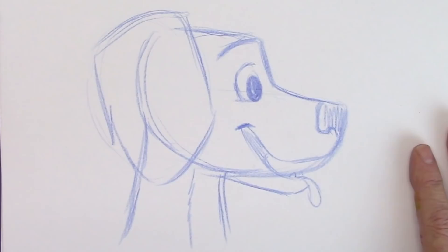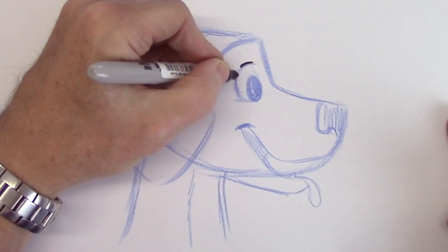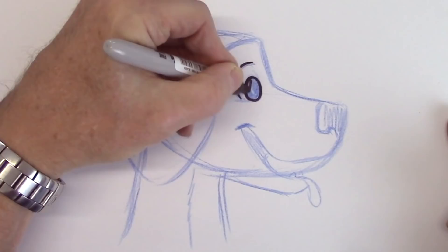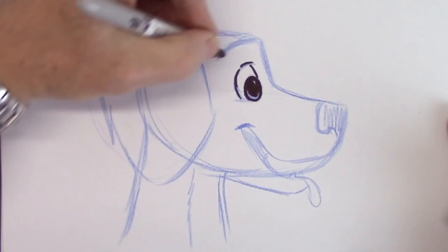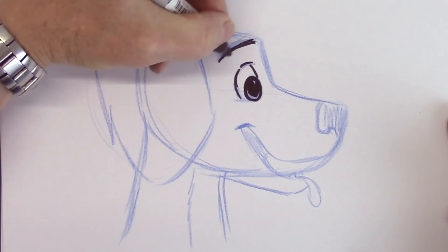All right, so here we go. Nice big pupil, like so. You leave a shine in there. A nice, long, bold eyebrow for Spencer.